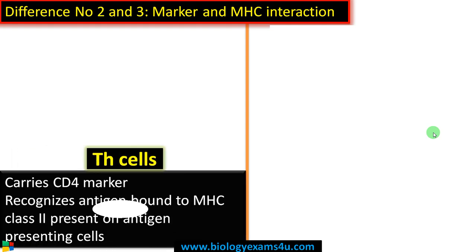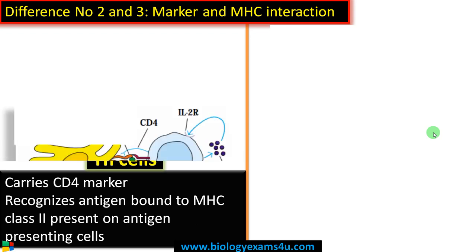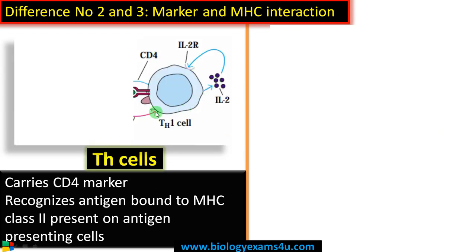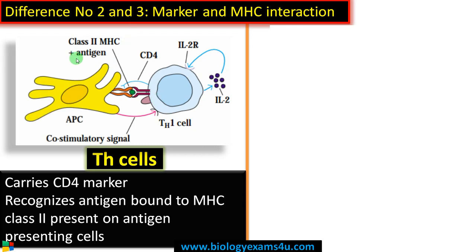Difference number two and three: regarding the marker and MHC interaction. In the case of T helper cells, the marker is CD4 — a glycoprotein present on the surface of the T helper cell. It is a co-receptor along with the T cell receptor. T helper cells can recognize antigen that is bound to MHC class 2.